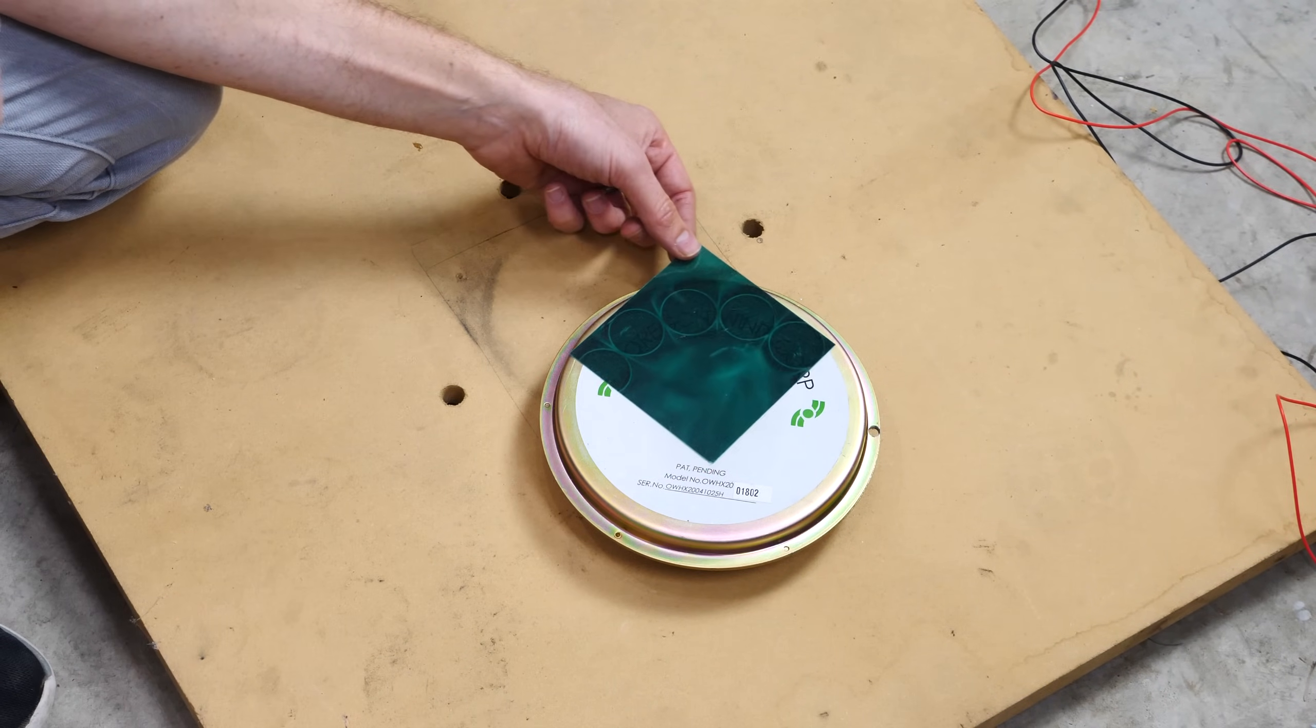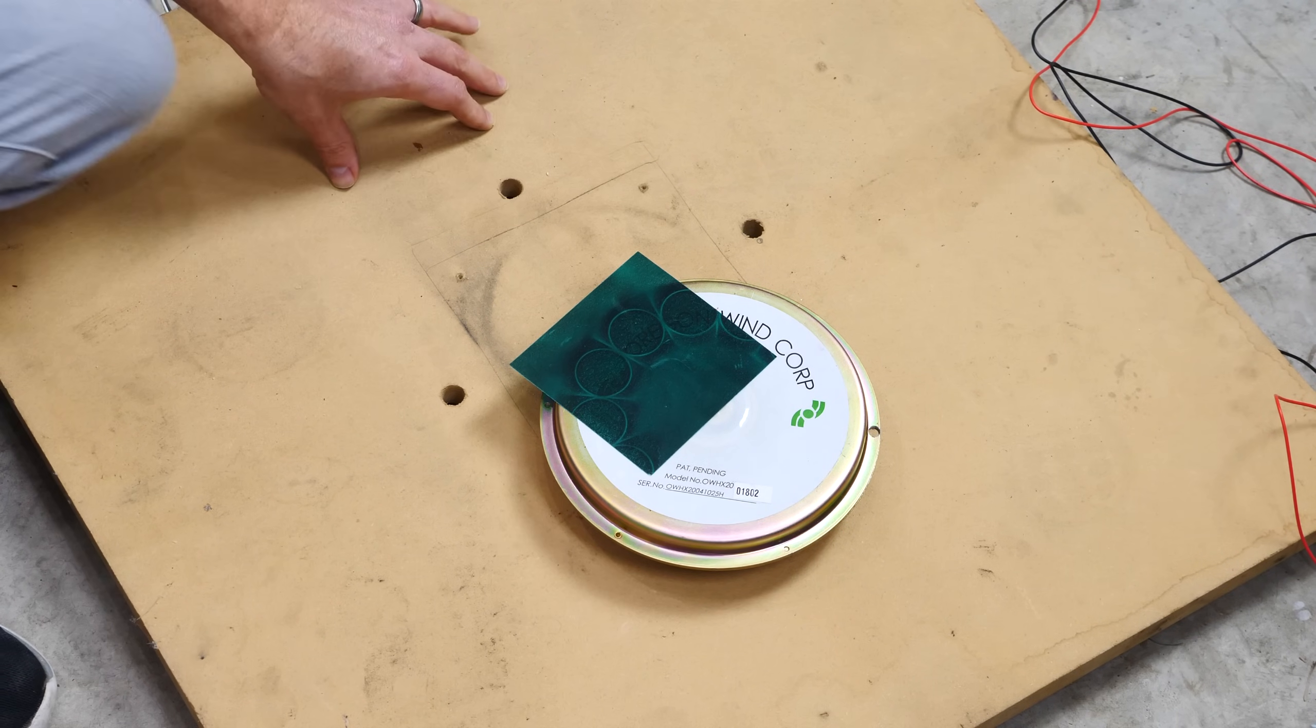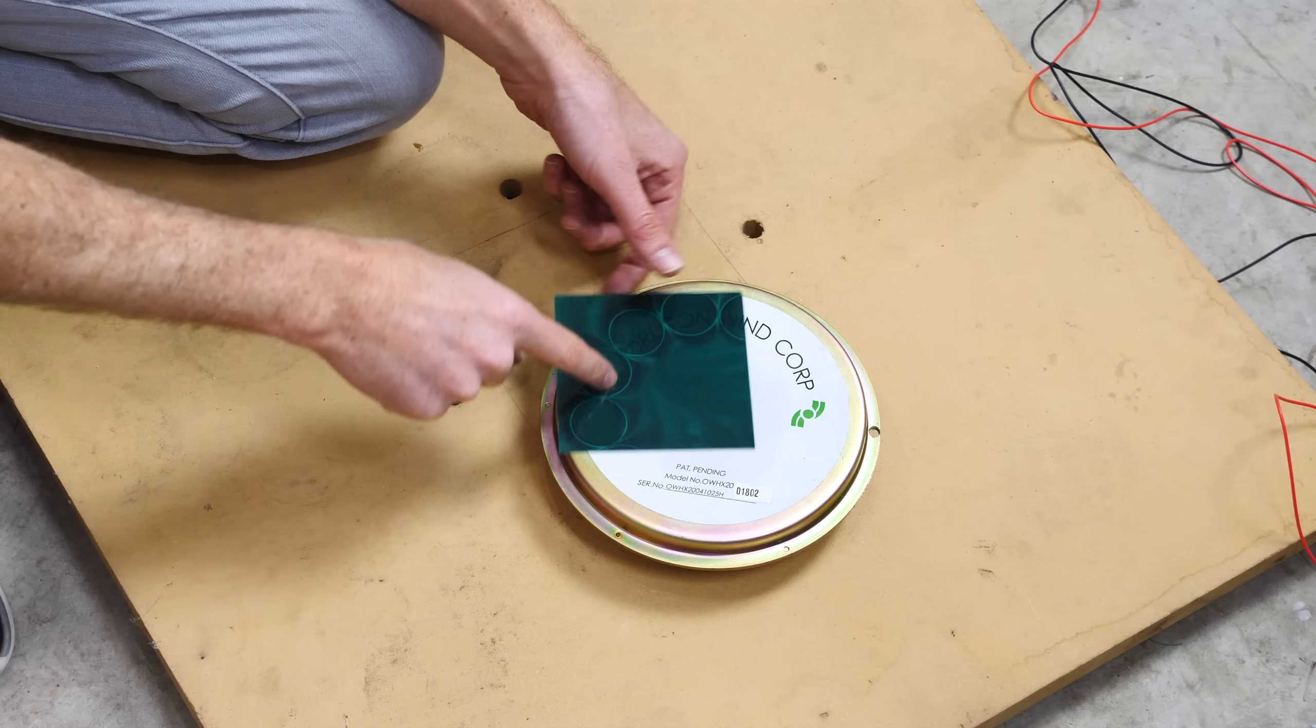So you can see the magnets inside of them here, you can see there's a bunch of strong neodymium magnets in there. So you can see all the magnets around the outside here.